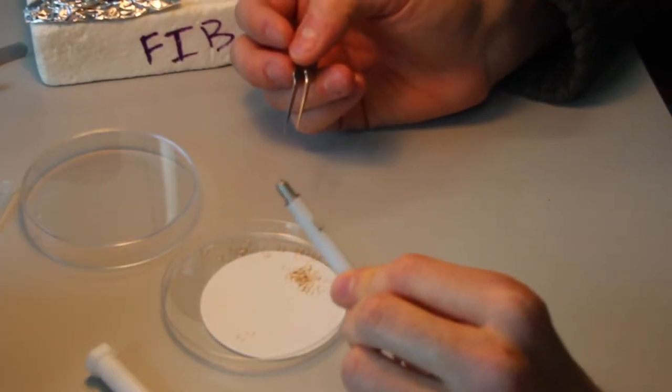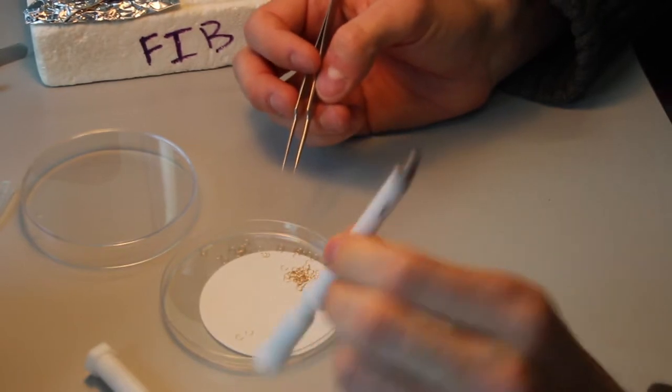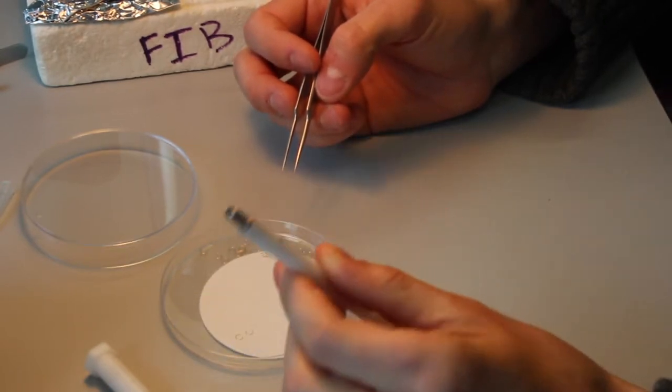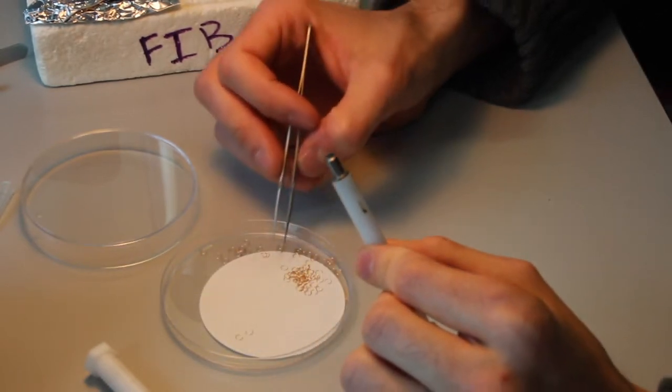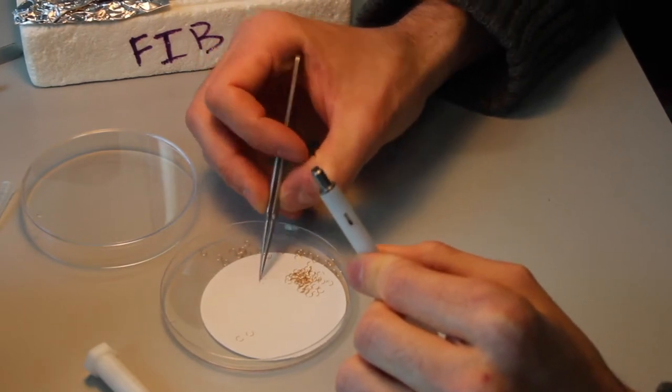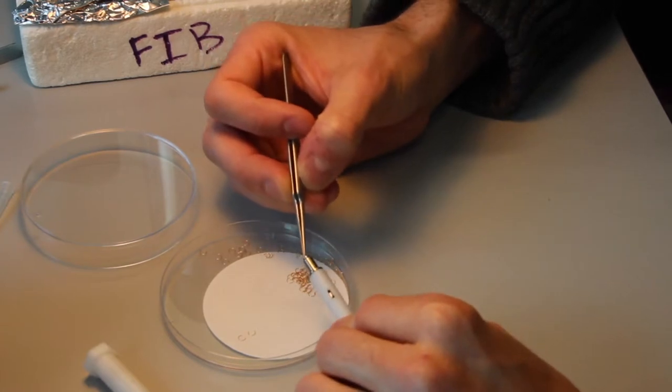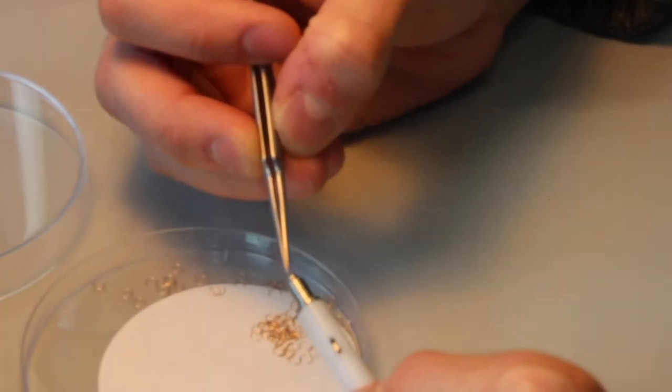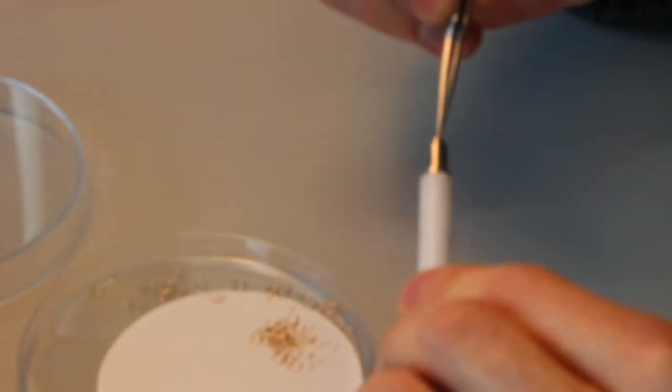This is the prep and loading video for the CryoFib SEM. We're using a clipping tool to clip grids, just as at the Cryos. With your tweezer, take one of the clip rings and insert that onto the end of the clipping tool and flatten that out.